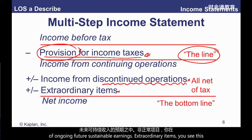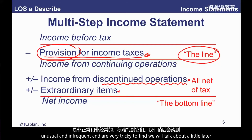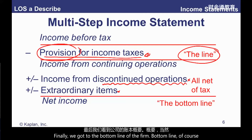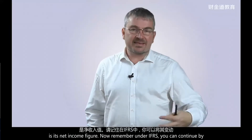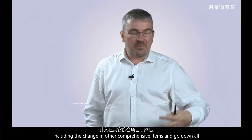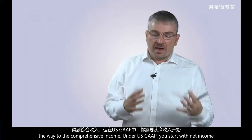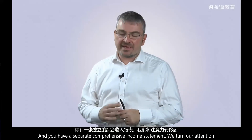Extraordinary items are seen under US GAAP but not under IFRS — these are items that are both unusual and infrequent and are very strictly defined. Finally, the bottom line is the net income figure. Under IFRS you can continue by including changes in other comprehensive income items to arrive at comprehensive income; under US GAAP you start with net income in a separate comprehensive income statement.